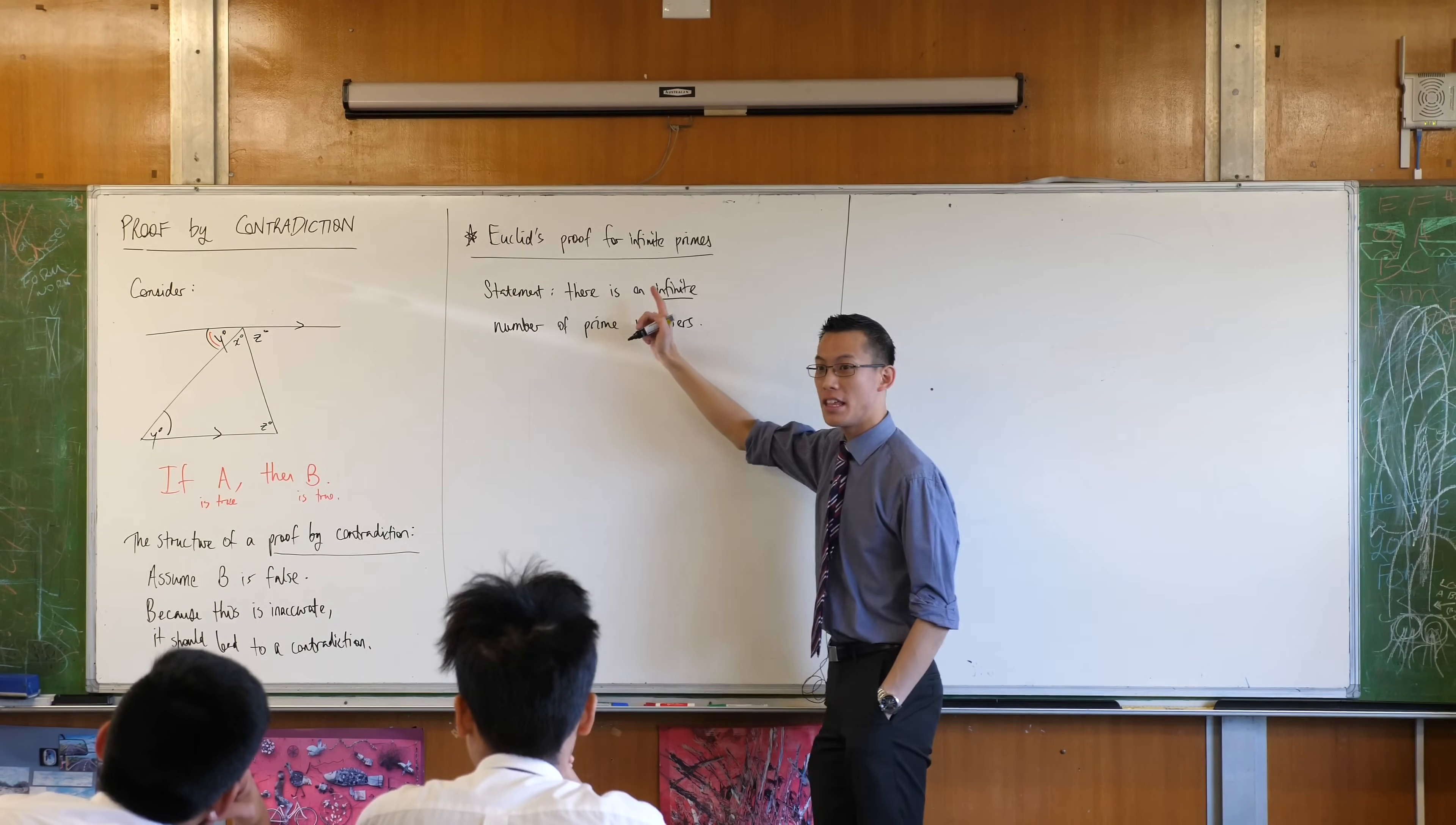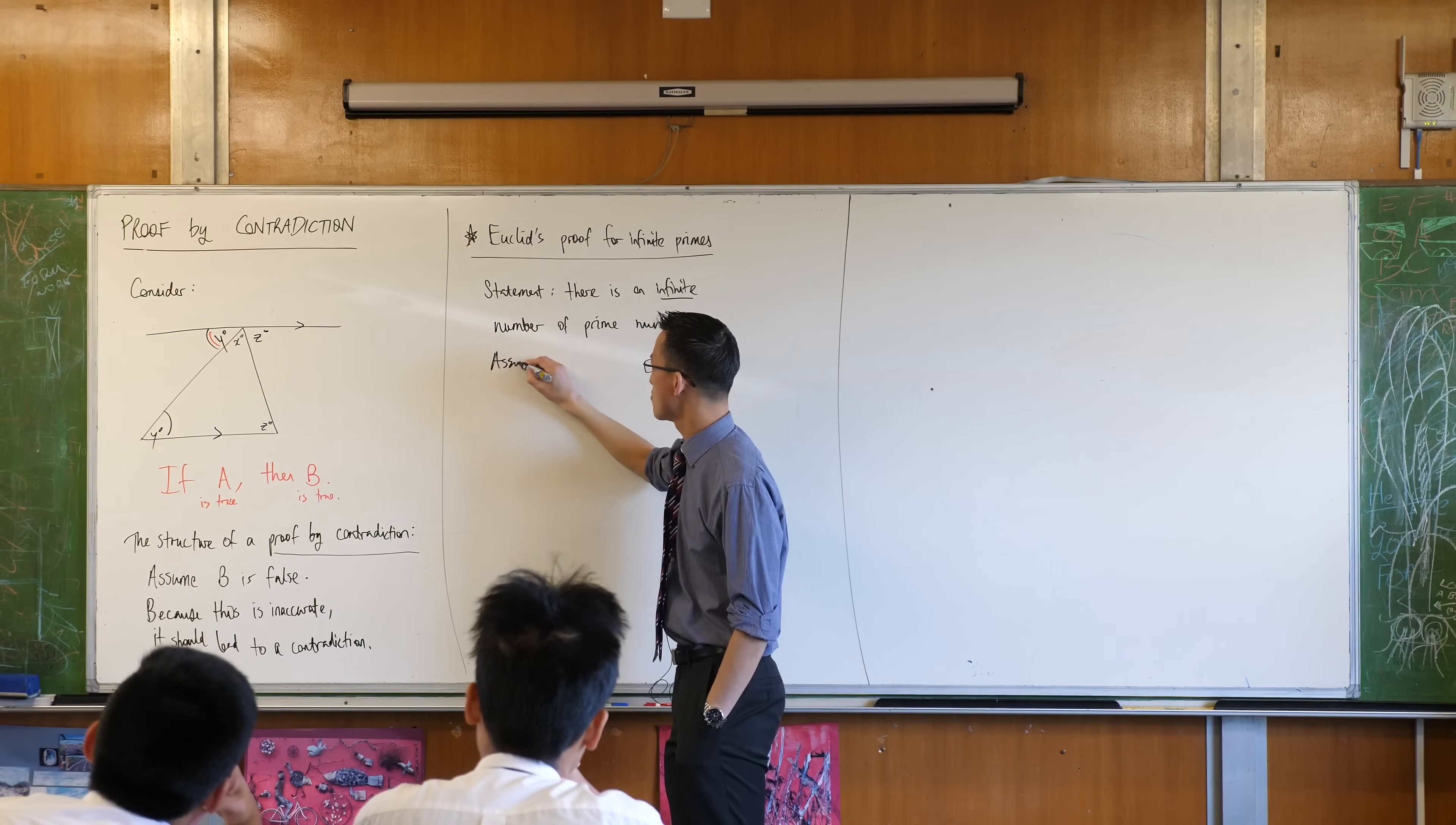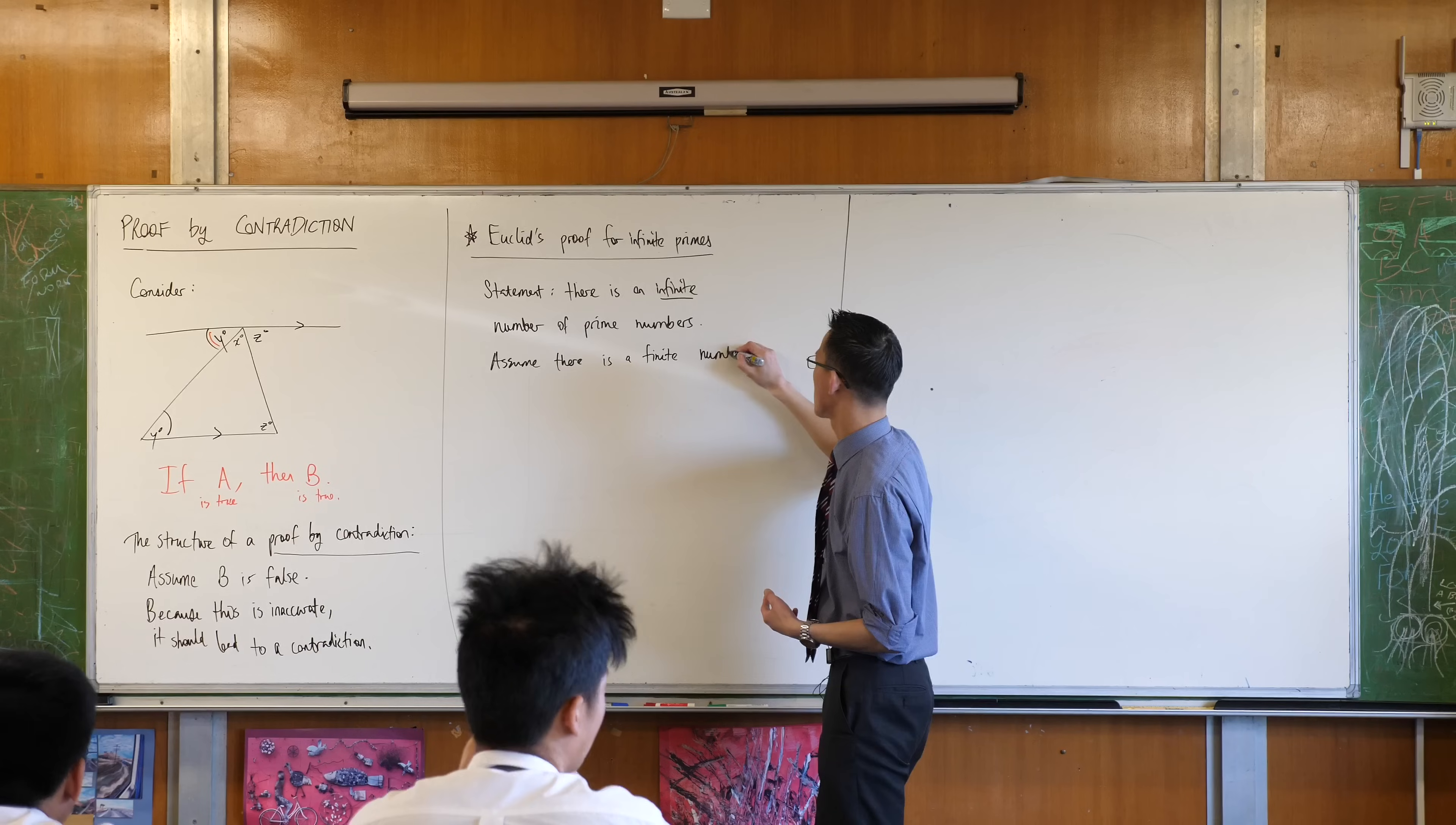Yeah, okay. So you've got to be very careful with the choice of this, but the assumption that this is false, right, is that we will assume there is a finite number, right, that I can list these out. This is the assumption we're going to make.